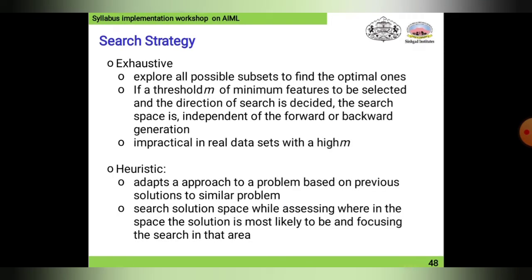Search strategy refers to searching datasets or particular values across multiple datasets. In AI/ML, the first type is exhaustive search, which explores all possible subsets to find the optimal ones. If a threshold m of minimum features to be selected is set and the direction of search is decided, the search space is independent of forward or backward generation — it may travel left, right, straight, upward, or downward.